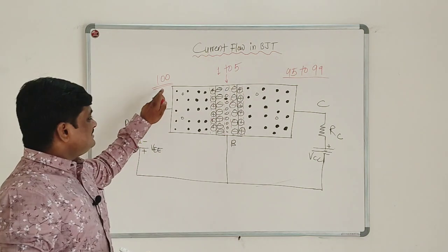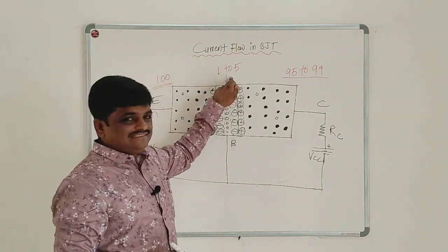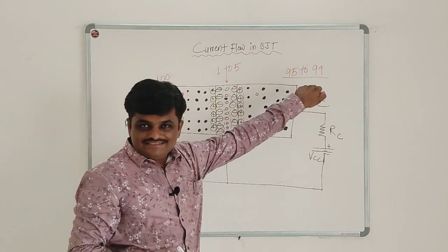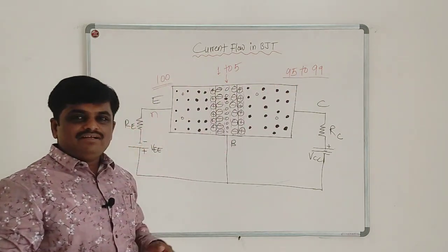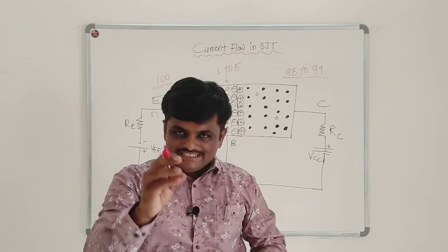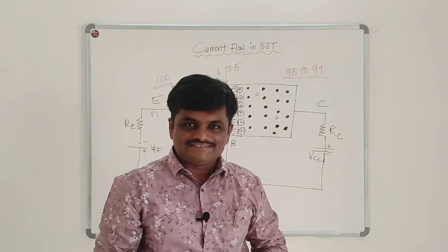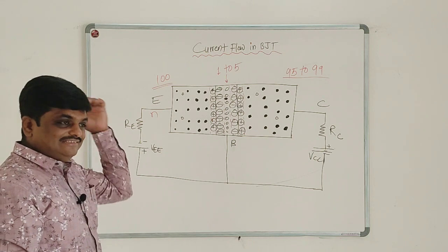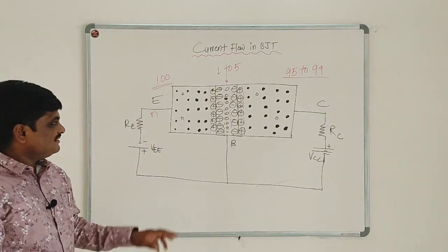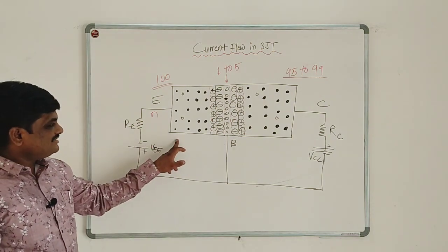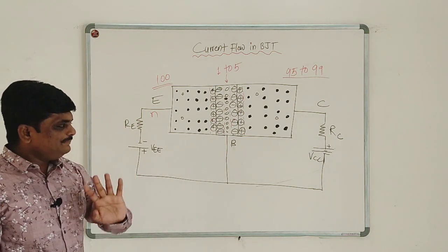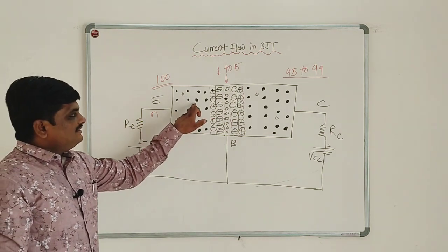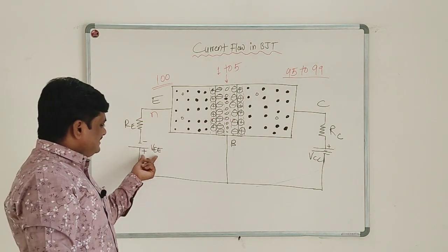So that is why the emitter is heavily doped, the base is the lightly doped region, and the collector's doping level is nearly equal to the emitter but somewhat less. To understand the current flow in BJT, let us consider this common base configuration with an NPN transistor and see what happens when you apply the biasing supply.